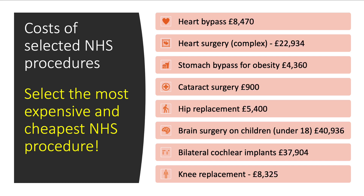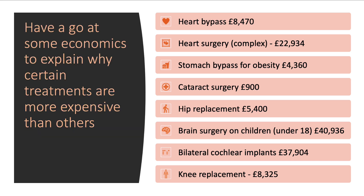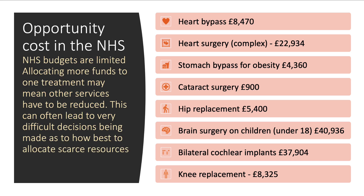It turns out that the most expensive procedure, as you'd probably expect, is brain surgery on young children, which costs over £40,000 per procedure. You can use economics to explain why some treatments are more expensive than others, and also use the idea of opportunity cost. The NHS budget is limited — allocating more funds to one treatment may mean that other services have to be curtailed or cut back, leading to very difficult decisions about how best to allocate scarce resources in the NHS.